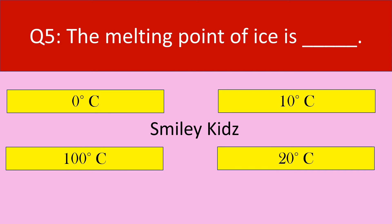Question number 5. The melting point of ice is — your options are: 0 degree Celsius, 10 degree Celsius, 100 degree Celsius, 20 degree Celsius. Your time starts now.